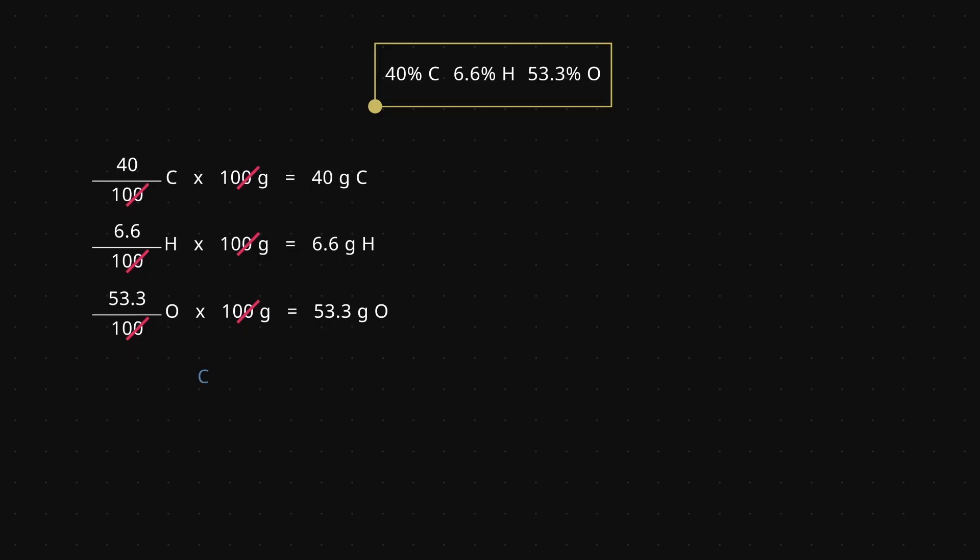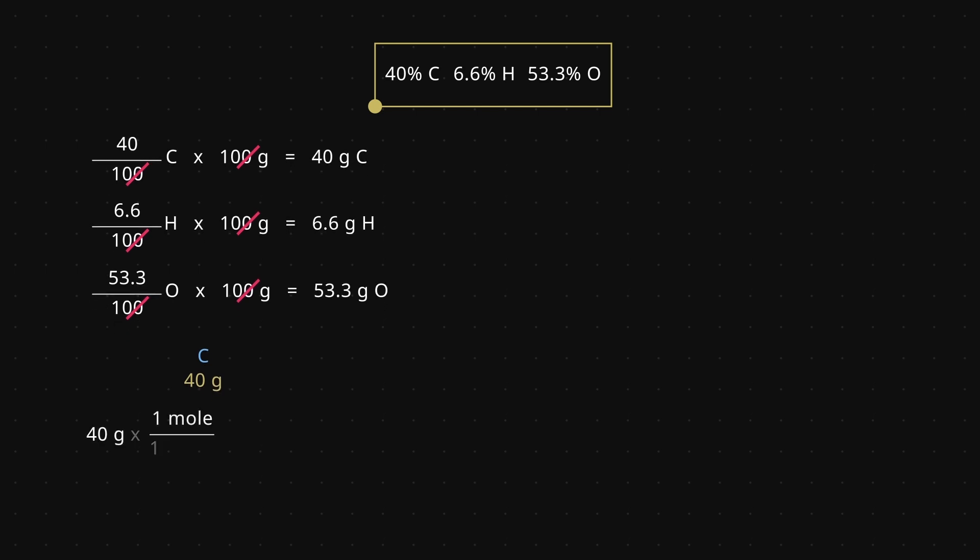For carbon, this is 40 grams multiplied by 1 mole over 12.01 grams or 3.3 moles. For hydrogen, this is 6.6 grams multiplied by 1 mole over 1.01 grams or 6.53 moles.